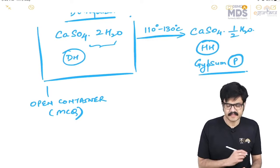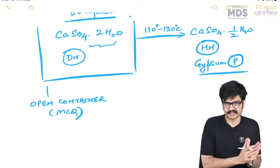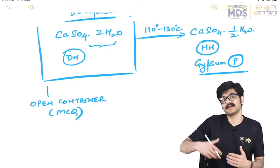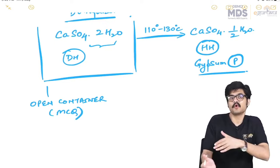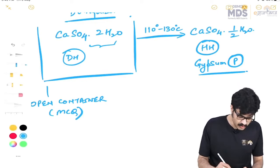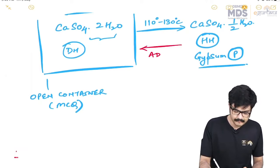If I add water to the hemihydrate, the reaction is reversed. In the laboratory or clinic, you take calcium sulfate hemihydrate, mix it with water at the correct water-powder ratio, and get back a rigid three-dimensional cast or mold — that is your set gypsum.